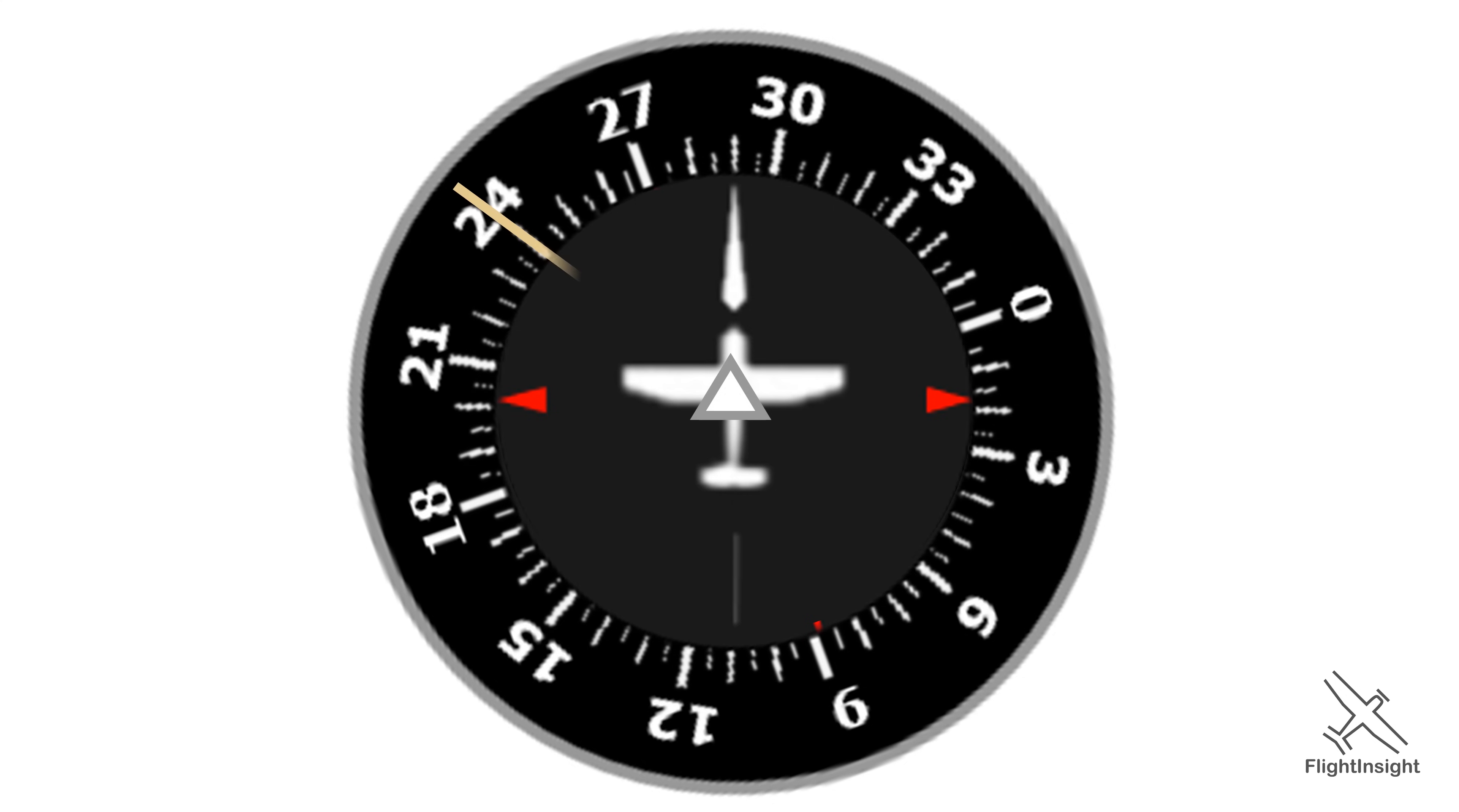Then draw the same outbound course of 240 into the fix. Notice it's in a different position this time because our heading is different than the first example. It's still right turn so we'll draw that, the outbound leg, and the inbound turn.